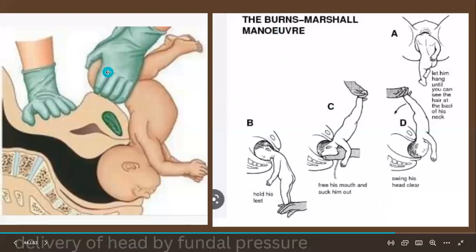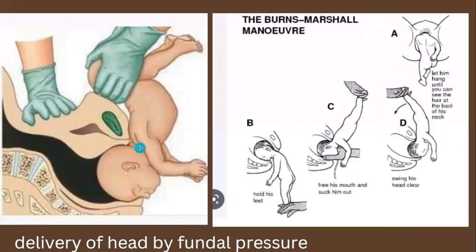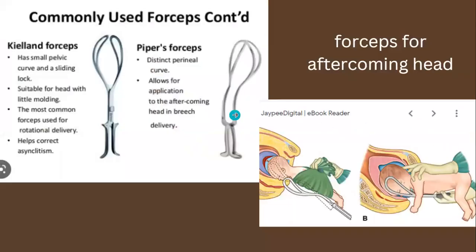The Burns Marshall maneuver involves applying fundal pressure to the fetal head at the nape of the neck to cause deflection and release the baby's head. The baby is allowed to hang until you can see the hair at the back of the neck, then you hold the feet and free the mouth, then swing the head clear. For the aftercoming head, forceps may also be used — the Kjelland and Piper forceps. Kjelland forceps has a small pelvic curve and sliding lock, more commonly used for rotational deliveries. Piper forceps has a long curve allowing application for the aftercoming head in breech delivery; it is the preferred choice, though Kjelland can also be used.